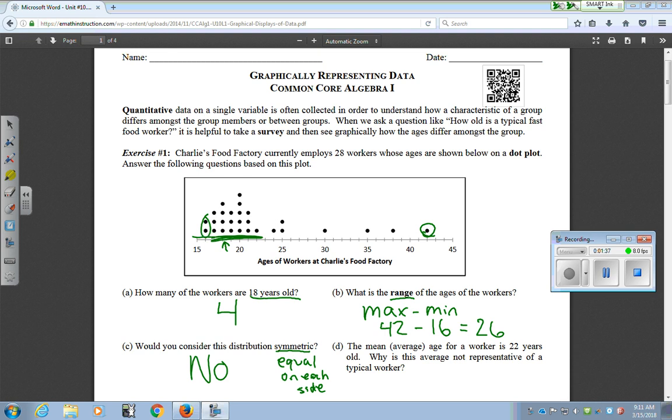And then the last question asks if the average age for workers is 22 years, and does that represent the typical worker? In this case, 22 would be this value right here. But a majority of the numbers are less than that. So this is not representative. In this case, maybe another value like the median would be representative of the data. Those are some things you want to think about when you're dealing with different graphs, because they always ask you questions about them.